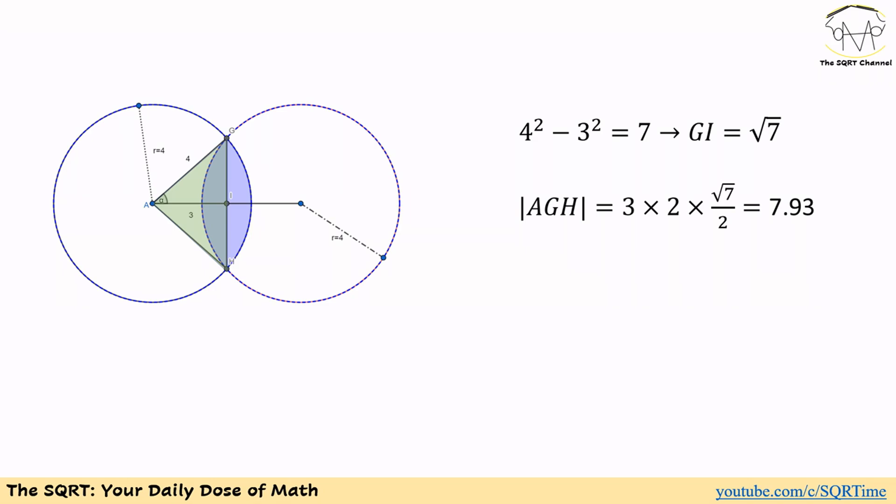Now we need to find the area of triangle AGH. Using the Pythagorean theorem: 4 squared minus 3 squared equals GI squared, so GI equals the square root of 7. The area of triangle AGH is then the height (which is 3) times the base (which is 2 times the square root of 7), divided by 2. The area comes out to 7.93.